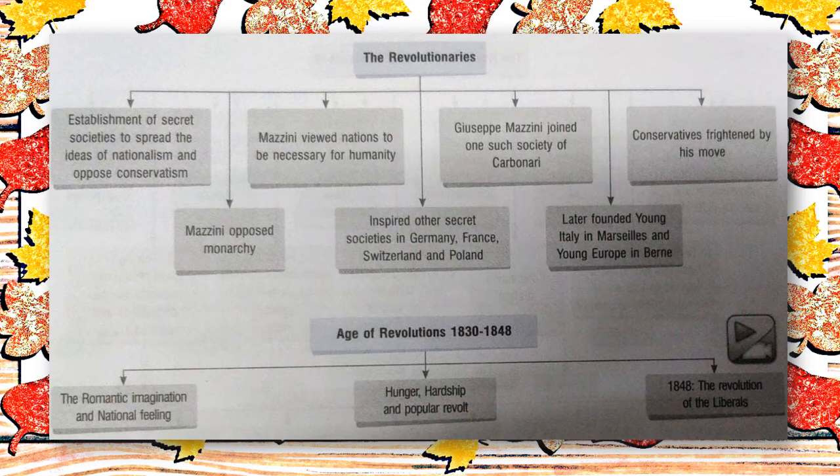This brings us to the revolutionaries. With the establishment of secret societies to spread the ideas of nationalism and oppose conservatism, we remember Giuseppe Mazzini, who opposed monarchy. Mazzini viewed nations to be necessary for humanity and inspired other secret societies in Germany, France, Switzerland and Poland. Mazzini joined one such society of Carbonari. Later, he founded Young Italy in Marseilles and Young Europe in Bern. Conservatives were frightened by his moves.